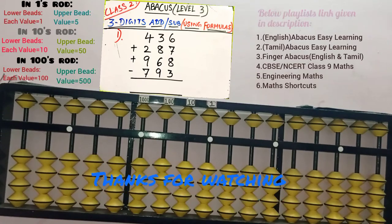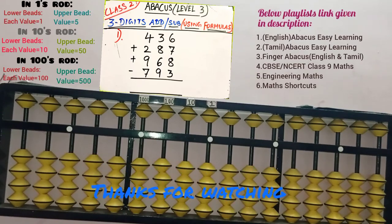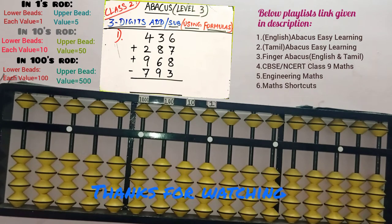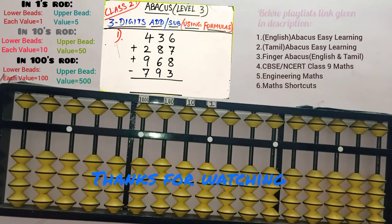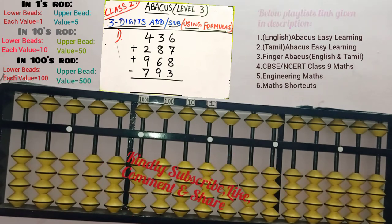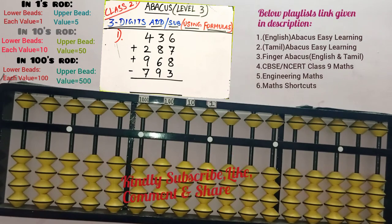Hello friends, we are in level 3 class 2 in Abacus. Here we are going to learn about 3-digit addition or subtraction with formulas — which means small friend, big friend, and combination formulas.